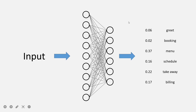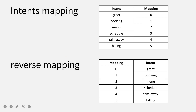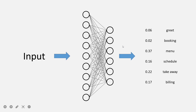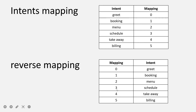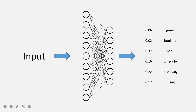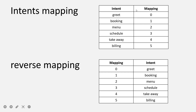So if the neural network predicts the first one, we will say that corresponds to greet. Position zero is greet, position one is booking, position two is menu, and so on. So if the highest value is at position two, that corresponds to menu. Basically you will have certain outputs and you will be trying to find the intent. While creating the data, you need to encode the intent as a number, that is as a value from zero to five.